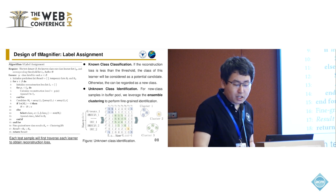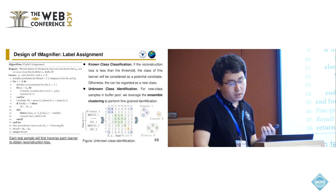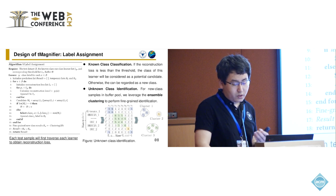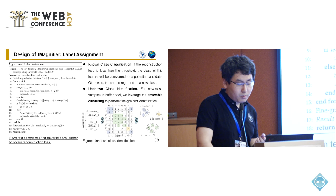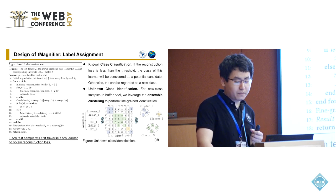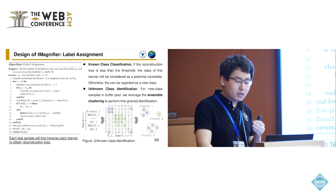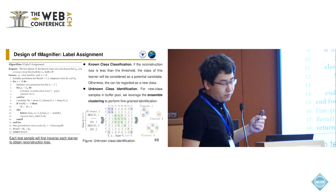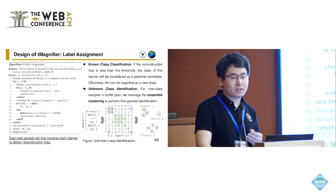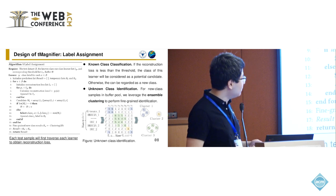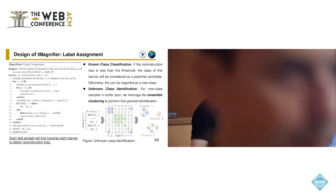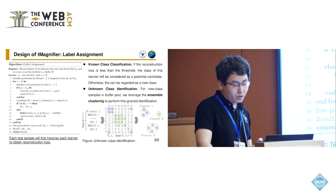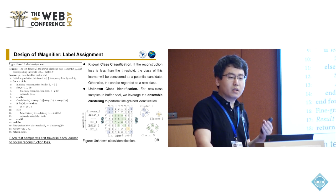The third component is for assigning labels. First, it traverses each learner to perform known-class classification. Then, it leverages ensemble clustering to obtain fine-grained labels for unknown attacks. As the figure shows, we can employ several classic clustering algorithms and ensemble their results.